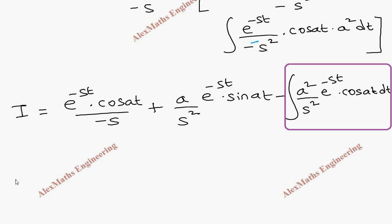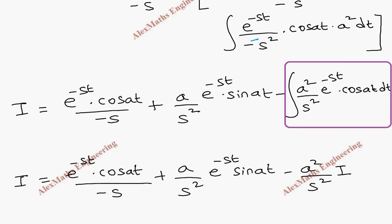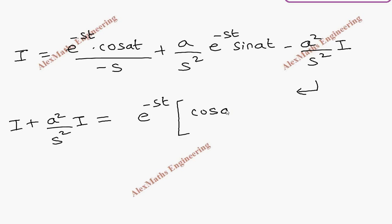Coming back from the beginning of the expression, I equals e^(-st) times cos(at) divided by -s, plus (a/s²) times e^(-st) times sin(at), minus (a²/s²) times I. Taking the I term to the left side as positive, we get I plus (a²/s²) times I equals e^(-st) times [cos(at)/(-s) plus (a/s²) times sin(at)], bracket close.